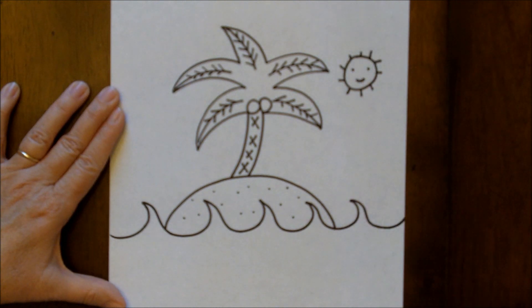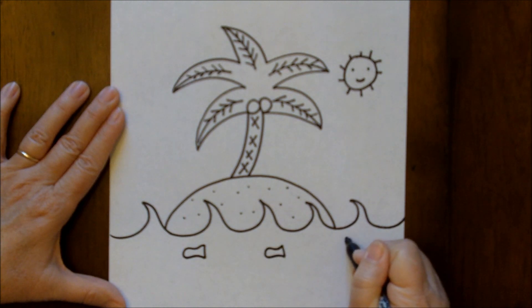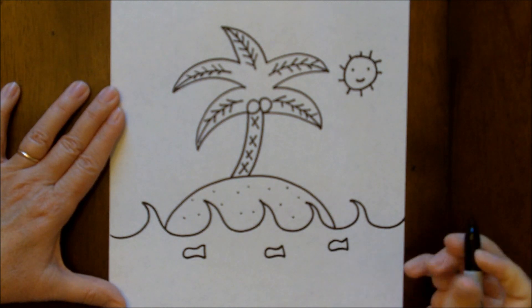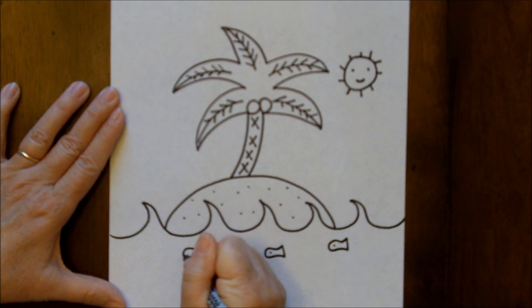There you go. If you'd like to put a couple of fish down below, that's just a straight little line with some curved lines. This is a school of fish, a school of three fish. Don't forget their eyes.